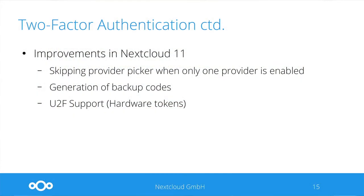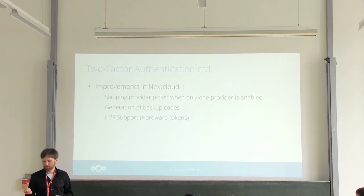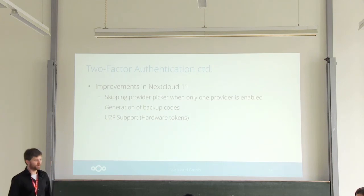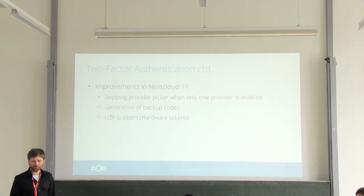In this field we also have more improvements coming in Nextcloud 11. Mostly they are user experience based. First is generation of backup codes — in case you lose your smartphone, you still want to be able to get back into your account. The other nice thing is universal two-factor support, which allows logging in with hardware tokens like a YubiKey — a USB dongle you plug in, press a button, and it copies a token to your clipboard to verify you are the person allowed to log in.